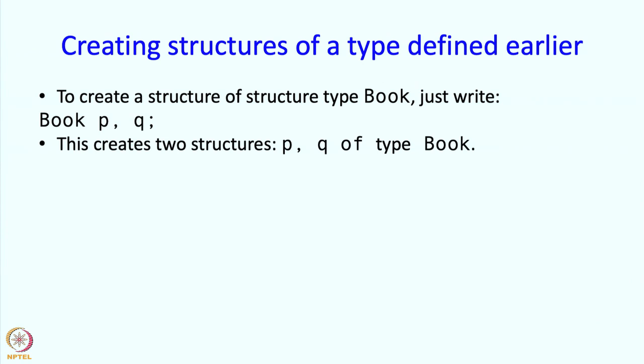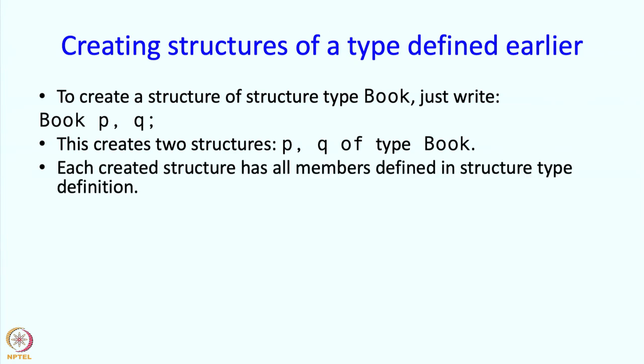So this creates two structures PQ of type book. Each created structure has all members defined in the structure type definition. So at this point, we have actually allocated memory.